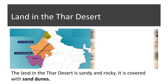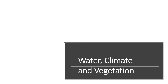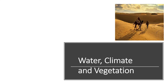The land in the Thar Desert is sandy and rocky, covered with sand dunes. Hot, dry winds are common in this desert. The desert regions receive very little rainfall. During the day, the sun gets extremely heated, while it cools down very fast at night.